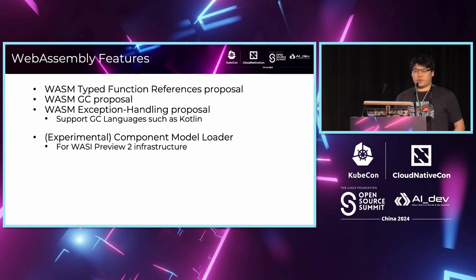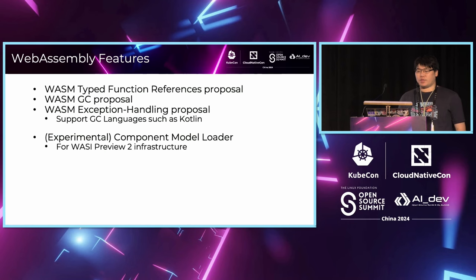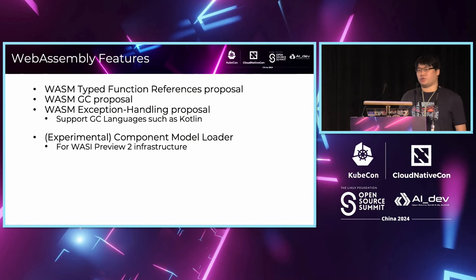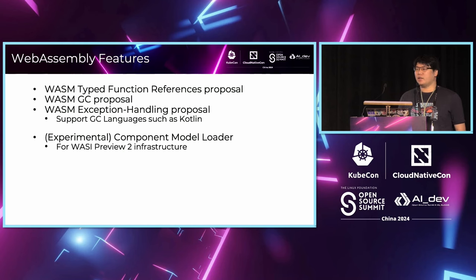In this release, we have lots of new WebAssembly features, like the tail-call versions, the WasmGC proposal, and exception handling. Of course, when you integrate all of these three proposals, we now support a lot of new GC-enabled languages, such as Kotlin or Golang.